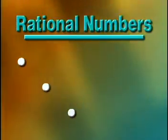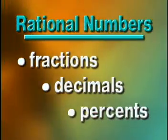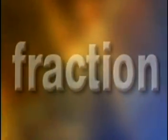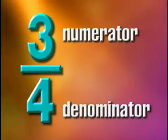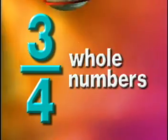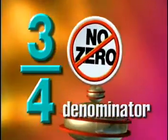Numbers can be written in different forms, depending on how they're being used. We're going to look at three forms of rational numbers—fractions, decimals, and percents. One way to write a rational number is as a fraction. A fraction has a numerator and a denominator. For a rational number, both of these must be whole numbers, and the denominator must not be zero.